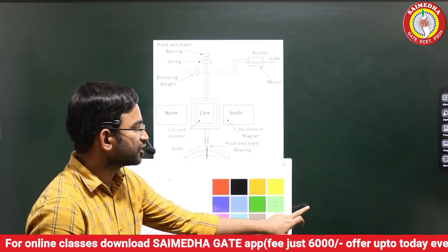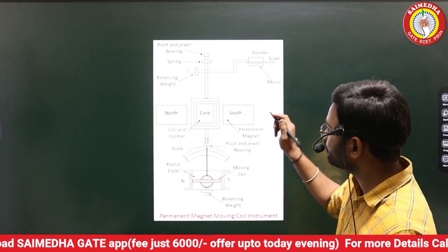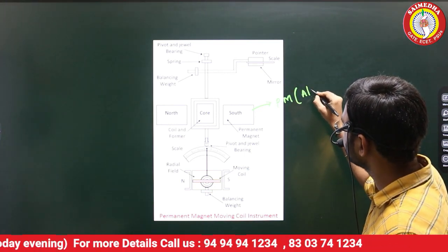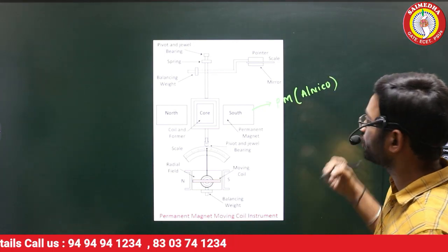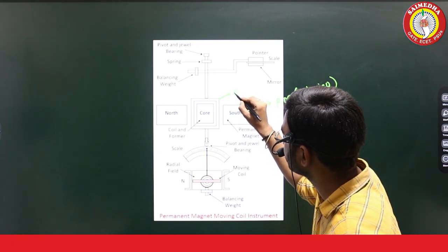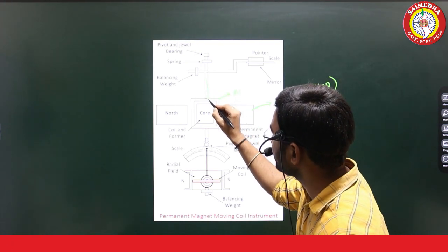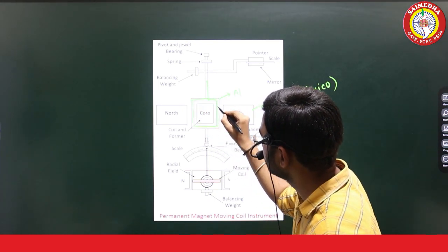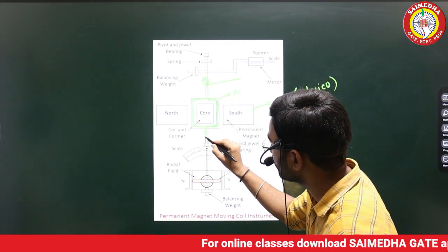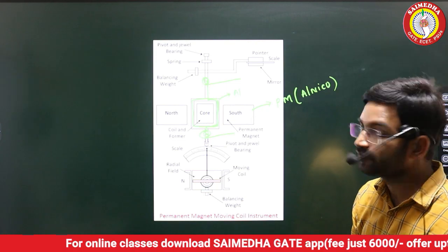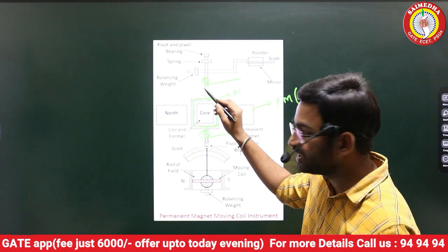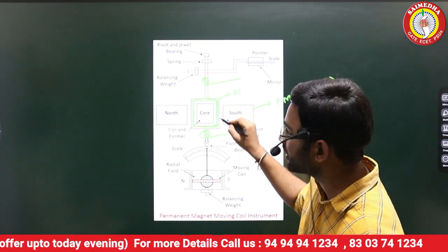It is a structure diagram. In PMMC instruments, from North Pole to South Pole, we use permanent magnets. We use an aluminum frame and copper wire wound on it. One end of the copper wire connects using a spring.